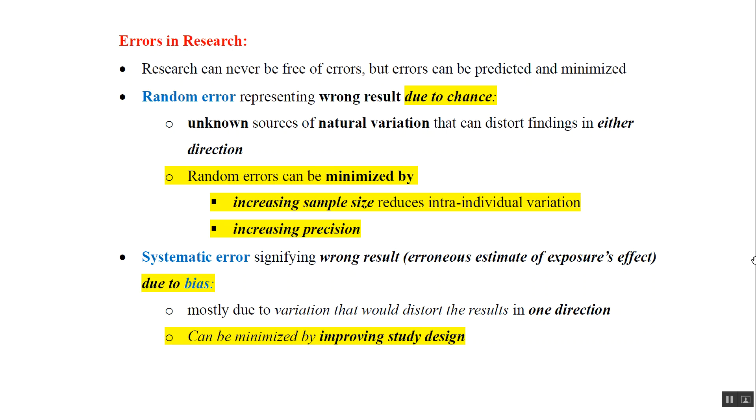Key distinctions: Random error is chance, systematic error is bias. Random error affects results in either direction, systematic error only in one direction. Random error is minimized by increasing sample size; systematic error by improving study design.